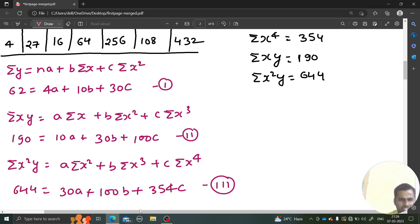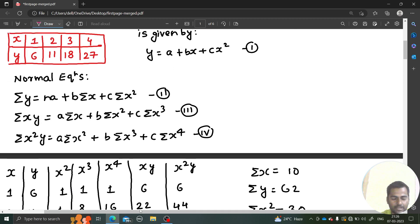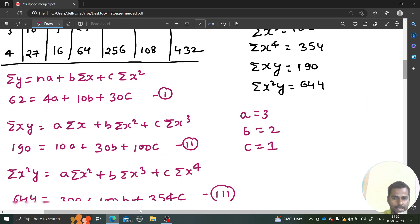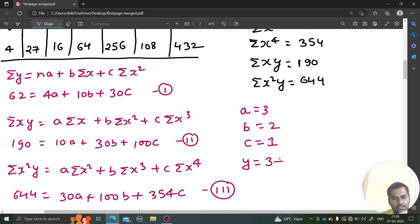This is finally giving us the first value. The value of a is 3. The second one is the value of b which is 2, and the third one is 1. If these are the values of a, b and c, our equation which we have assumed as y equals to a plus bx plus cx square would be 3 plus 2x plus x square.